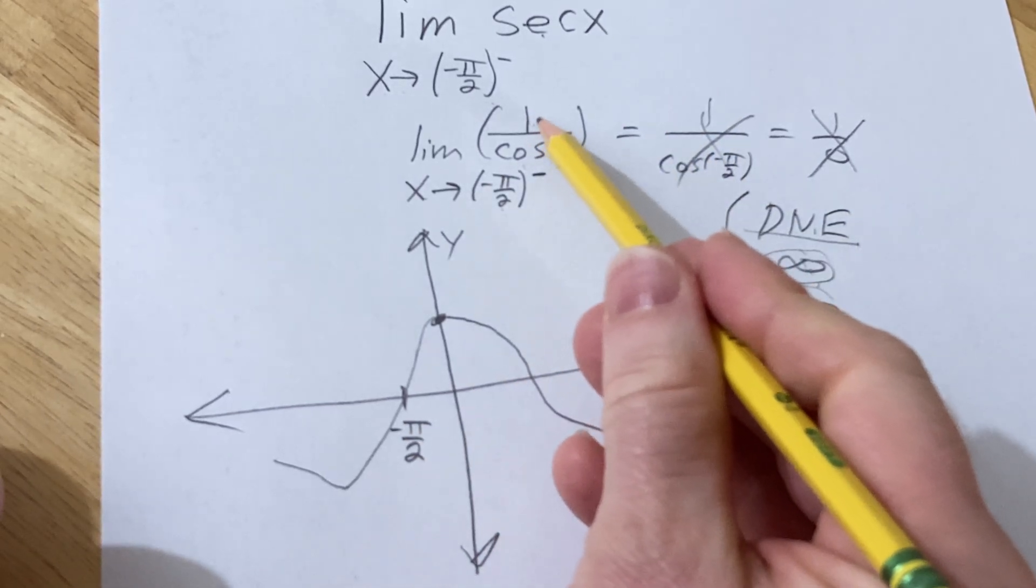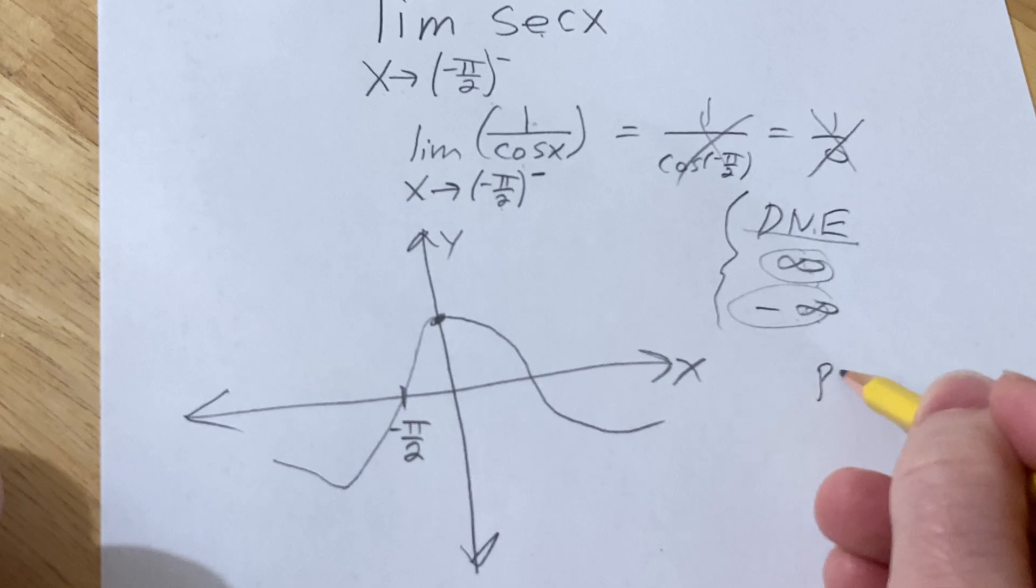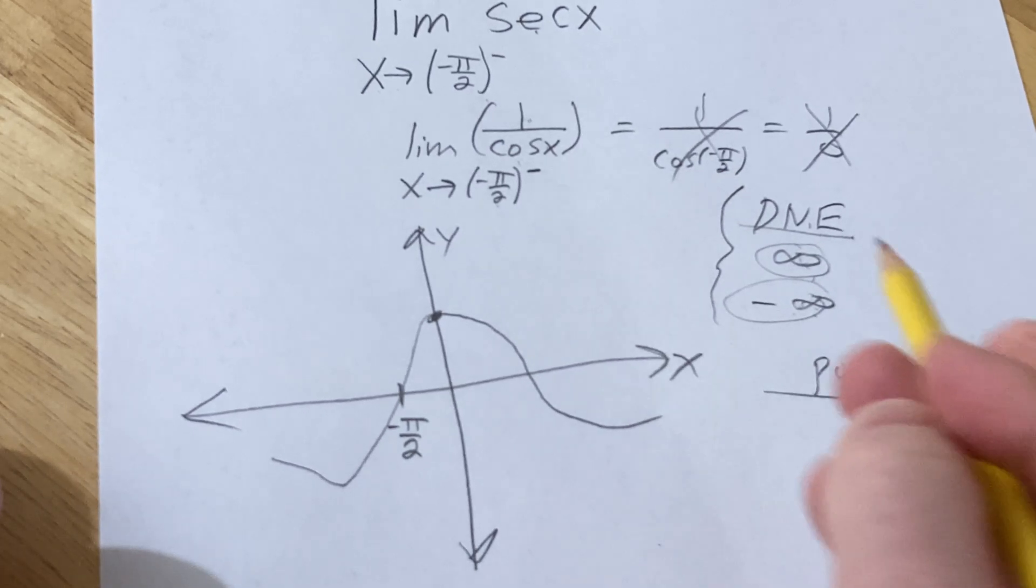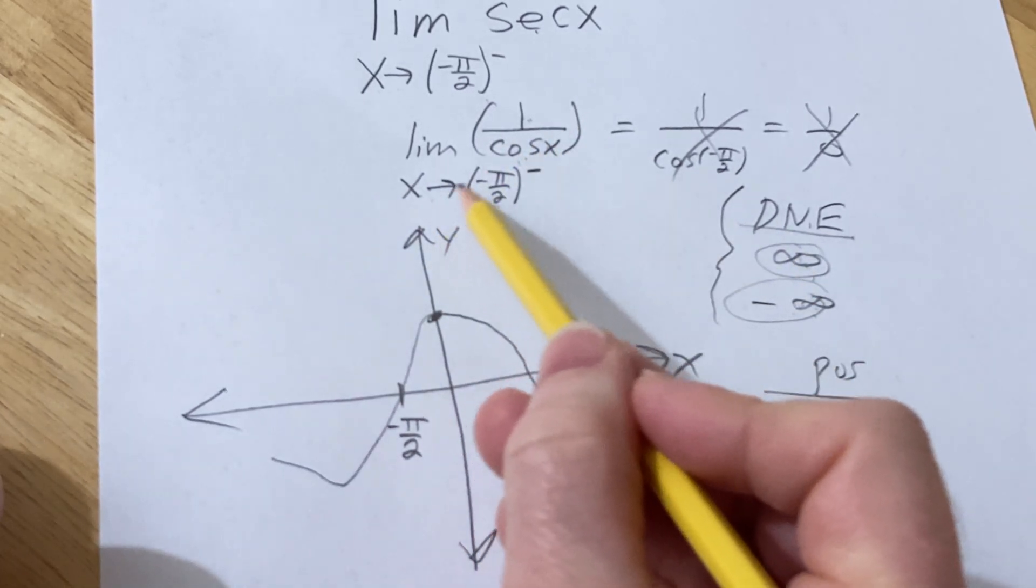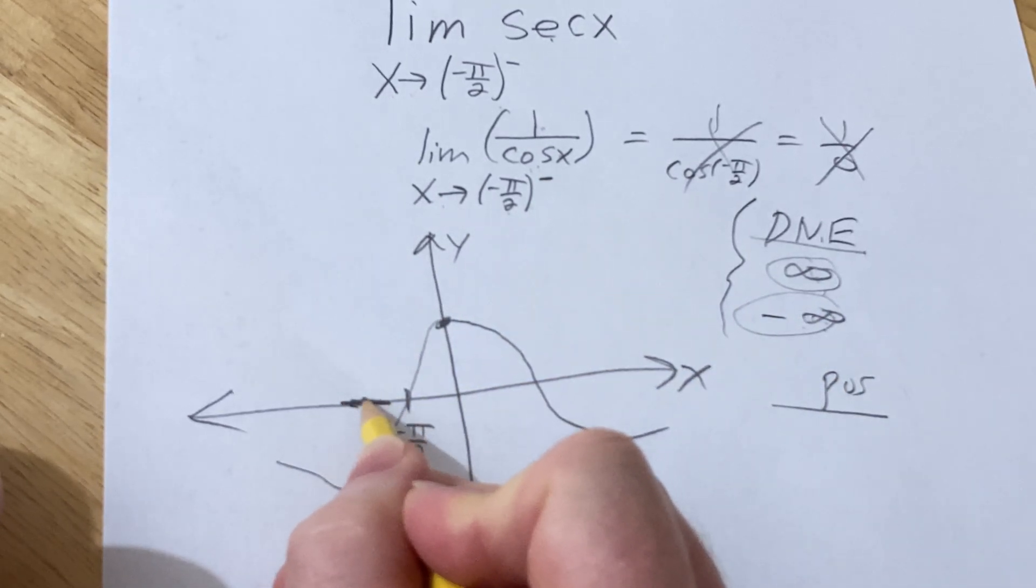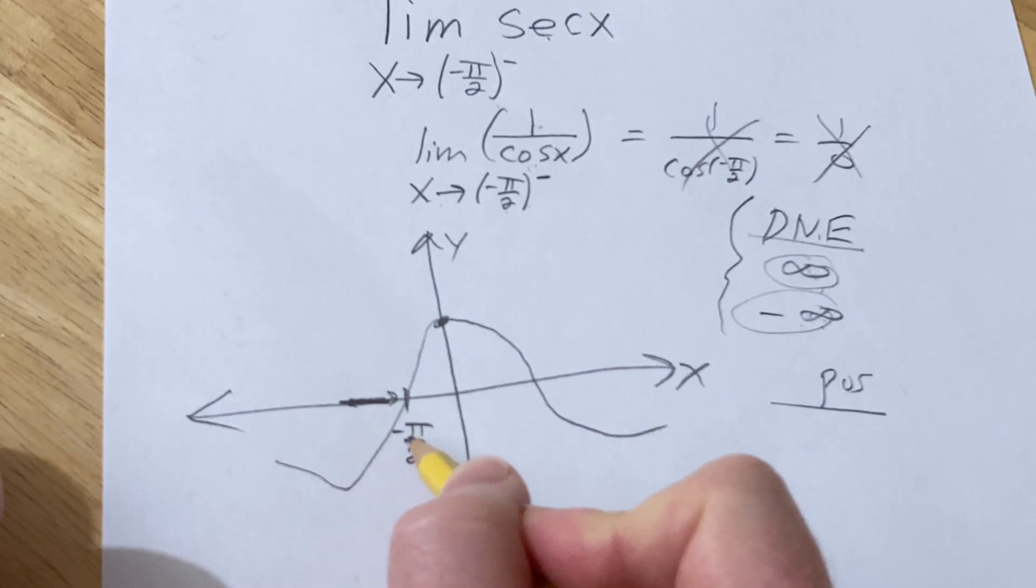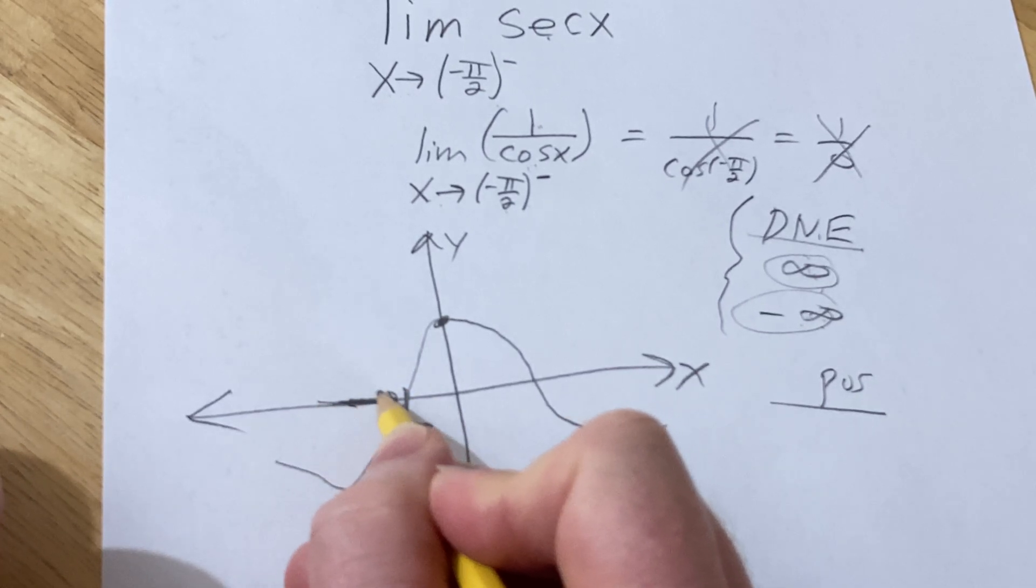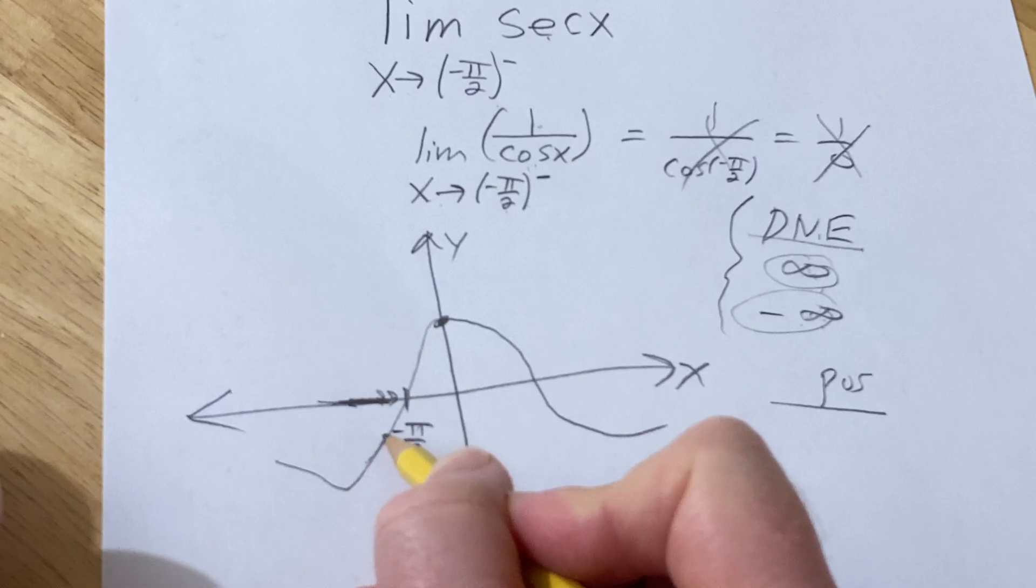This is a fraction. The numerator is positive because there's a 1. In the denominator, x is approaching negative pi over 2 from the left. That means x is traveling this way, getting infinitely close to negative pi over 2. But as x travels this way, the y values approach 0.